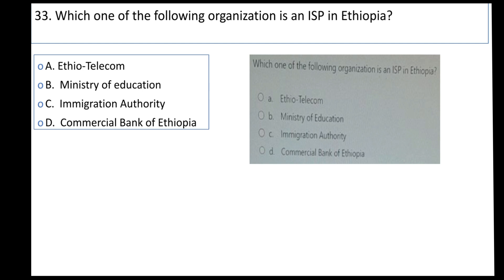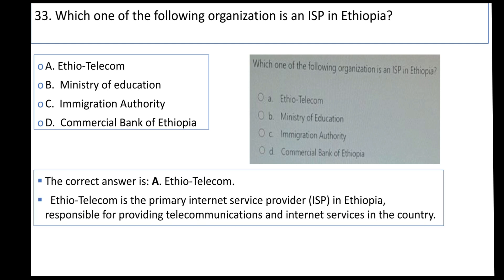The ISP is the Internet Service Provider. Its primary function is providing internet services. The correct answer is A. EthioTelecom is the primary internet service provider in Ethiopia, responsible for providing telecommunication and internet services in the country.